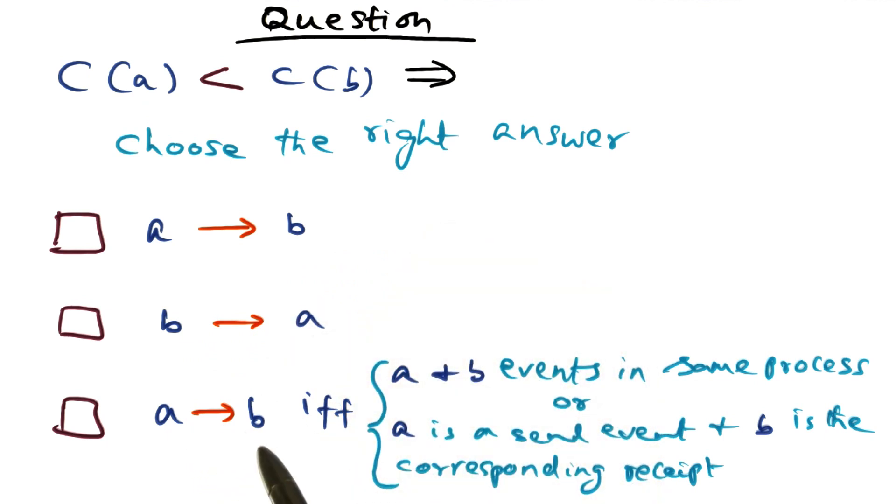Or does that mean A happened before B with the condition that it's either the case that A and B are events in the same process or A is the act of sending a message and B is the act of receiving the corresponding message. So you have to pick the right choice among these three choices.